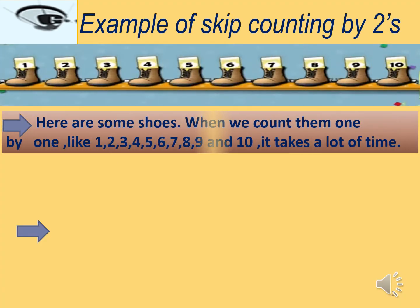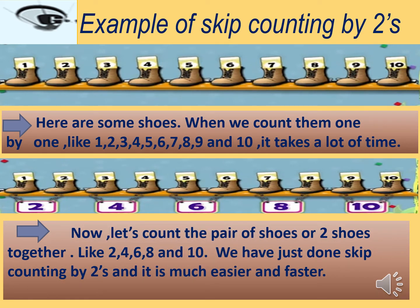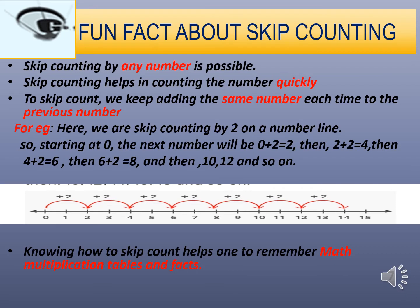Now I will explain an example of skip counting by two so the concept is clearer. As you can see in this picture, there are some shoes. When we count them one by one — one, two, three, four, five, six, seven, eight, nine, ten — it takes a lot of time. Now let's count pairs of shoes together: two, four, six, eight, ten. We just did skip counting by twos, and it is much easier and faster.